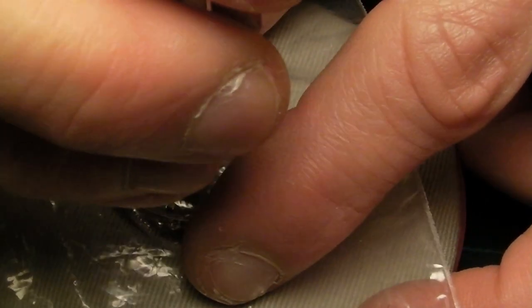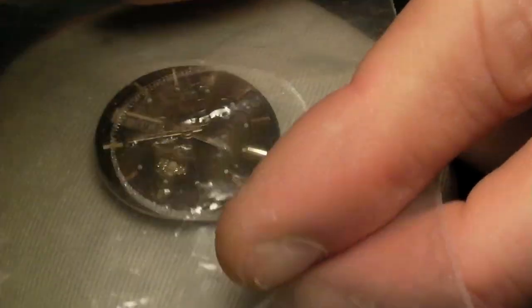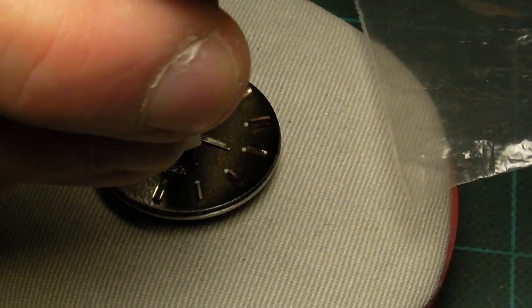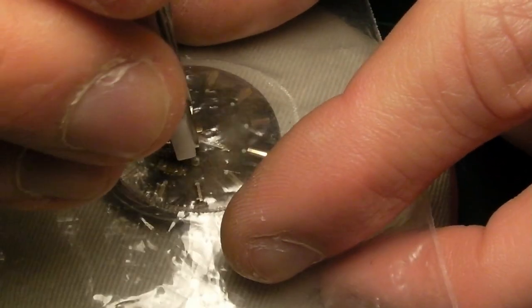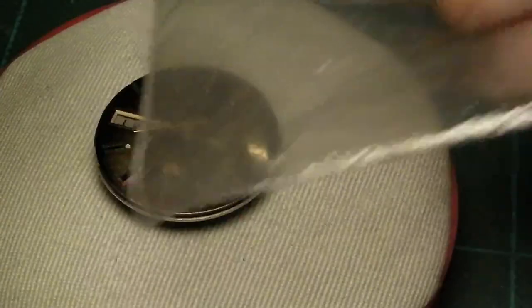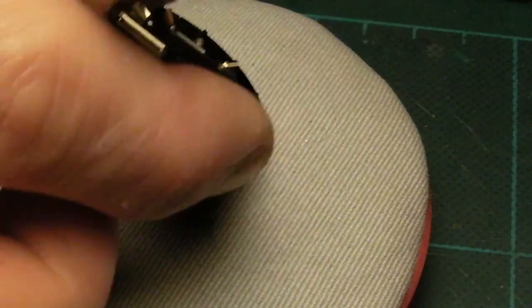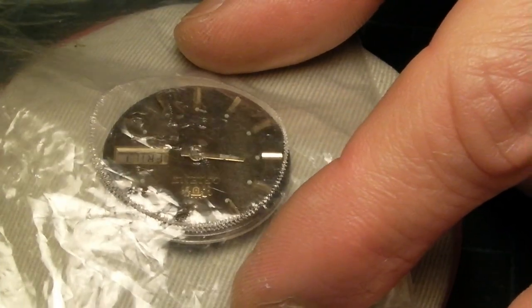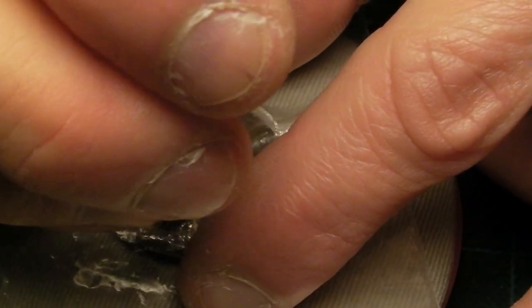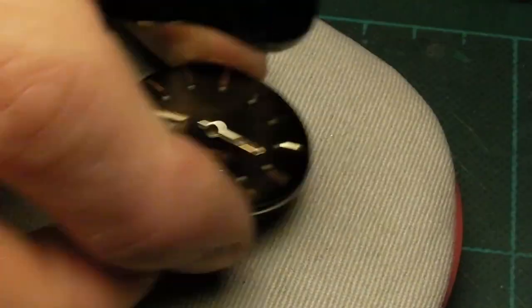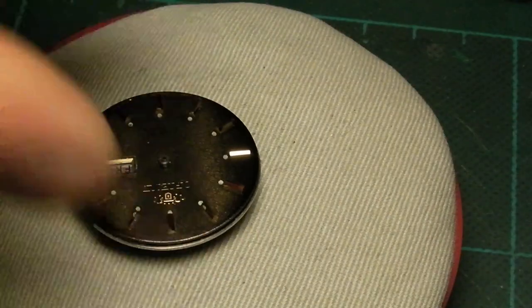Here I'm using a Presto hand removal tool to remove the hands. The thing that's quite good with the Presto tools is it allows you to remove each hand individually rather than all at once. I do like hand levers but the Presto tool does come in handy.